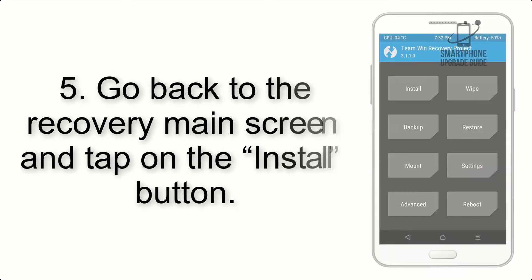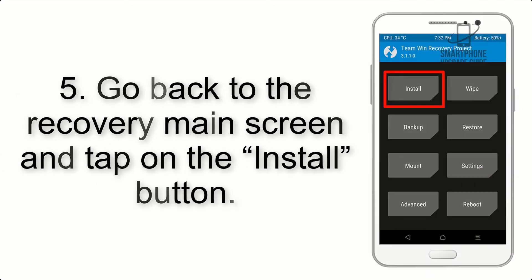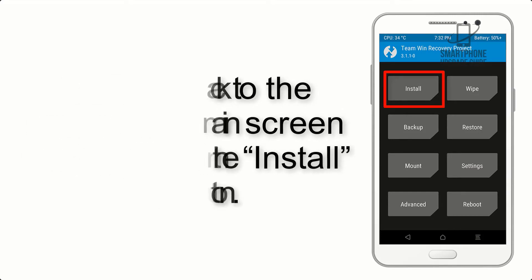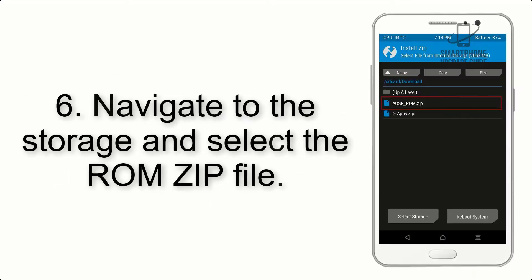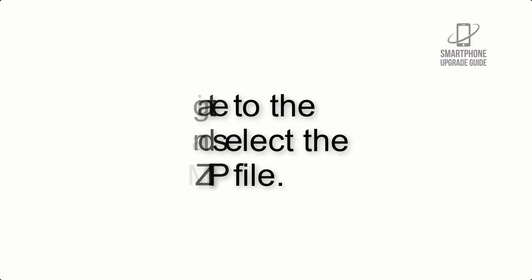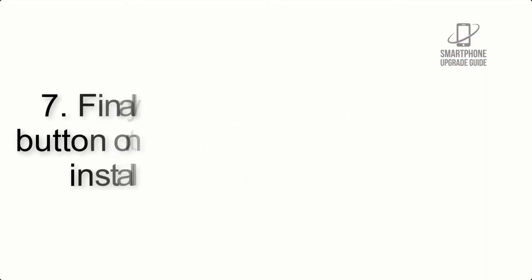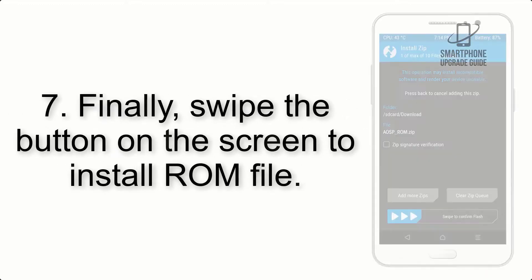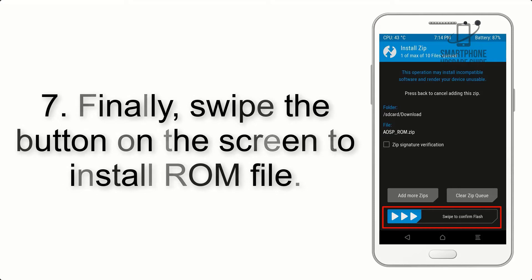Step 4: Swipe the button to wipe the device. Step 5: Go back to the recovery main screen and tap on the Install button. Step 6: Navigate to the storage and select the ROM zip file.